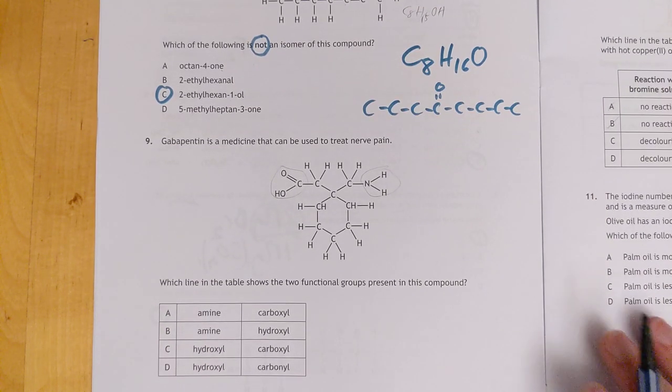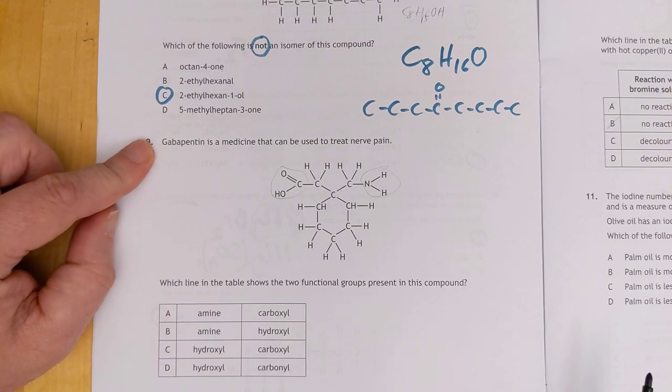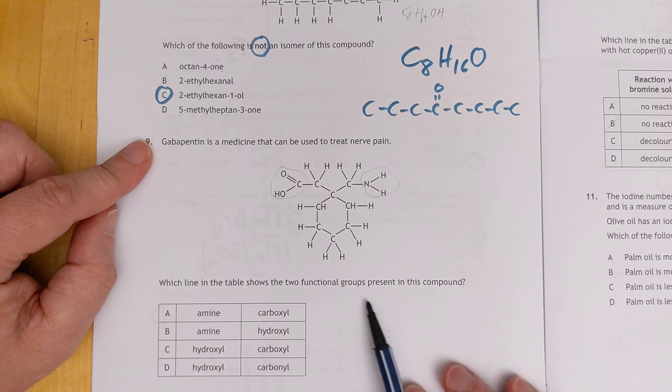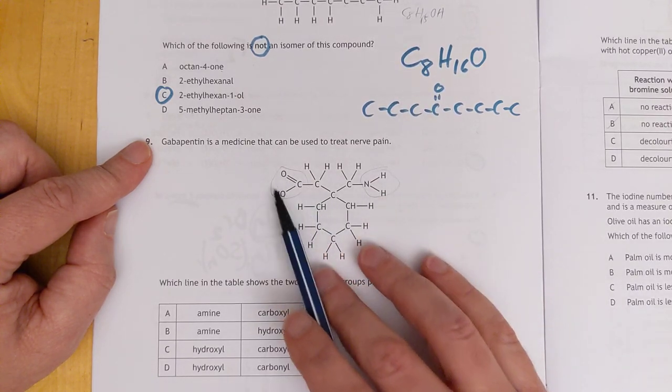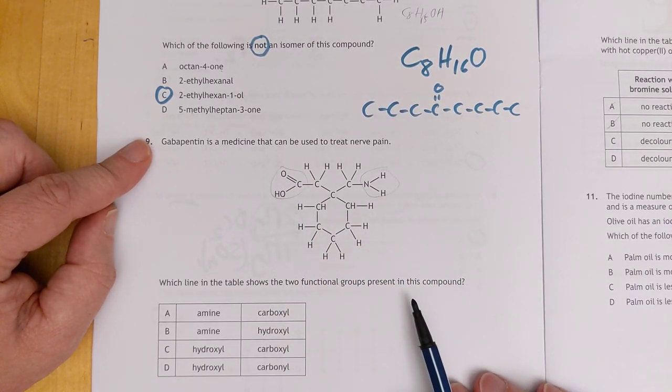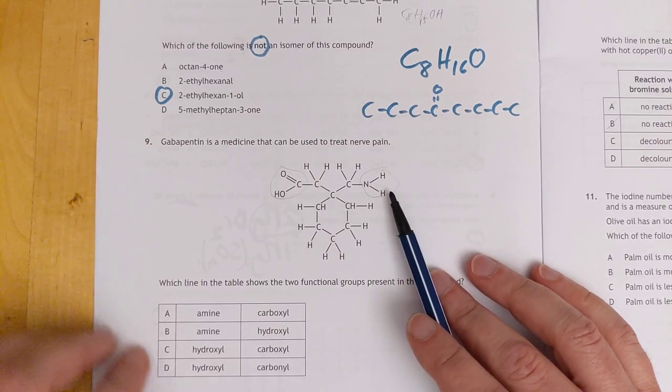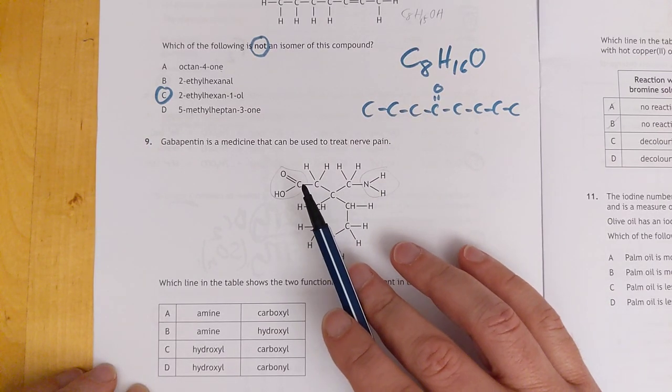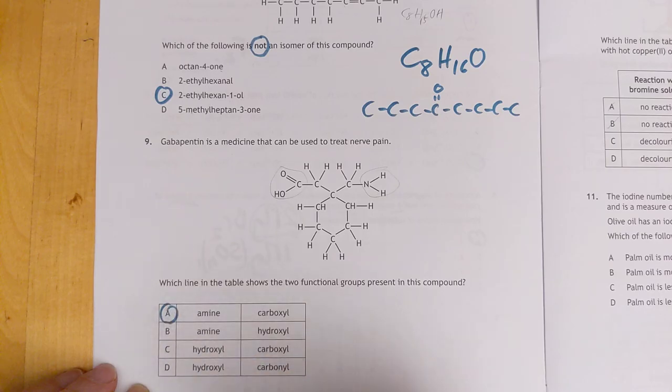Number nine. Medicine that can be used to treat nerve pain. Which line on the table shows the two functional groups present? This person has circled these functional groups, which is nice. Hopefully they've got the right answer. That is the amine group. And that is the carboxyl group. So that's a nice easy one for a change.